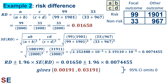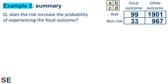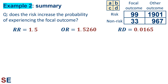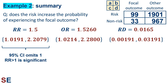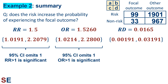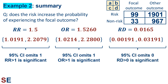It really does look like the focal outcome is more common in the group with the risk factor. Our 95% confidence interval for the risk difference does not include 0, so the sample risk difference is significantly larger than 0. Our best estimate for the increase in the population is 1.65%, but it could be just barely larger than 0, or as large as almost 3.2%. Our sample data gives us relative risk and odds ratio values larger than 1, and a risk difference larger than 0, suggesting the risk increases the probability of the focal outcome in the population.